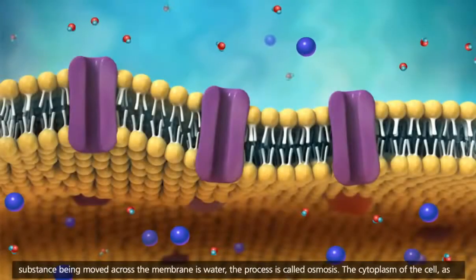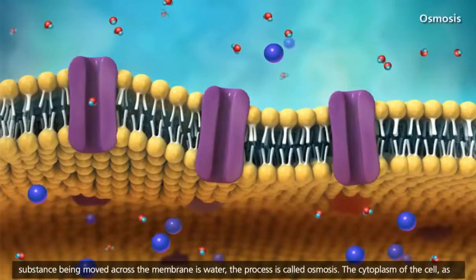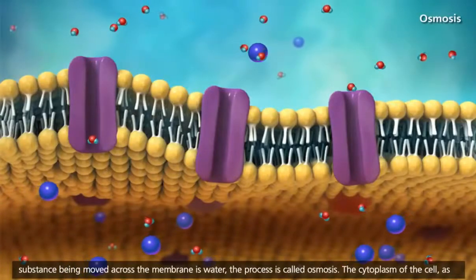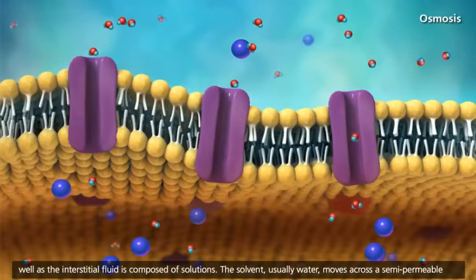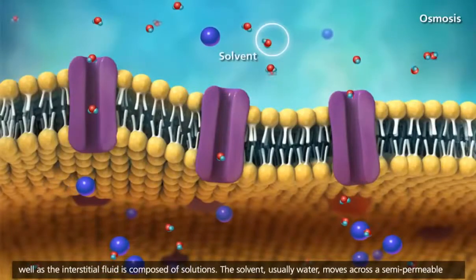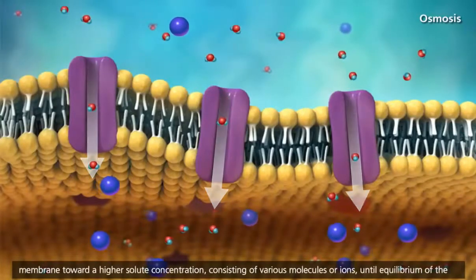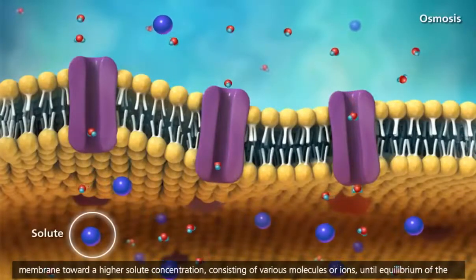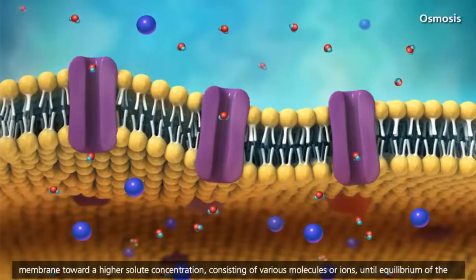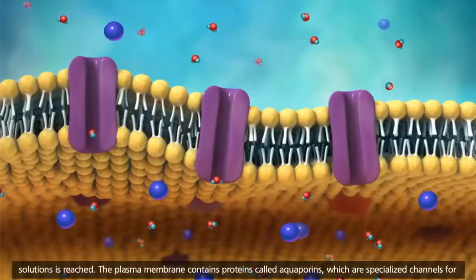When the substance being moved across the membrane is water, the process is called osmosis. The cytoplasm of the cell, as well as the interstitial fluid, is composed of solutions. The solvent, usually water, moves across a semi-permeable membrane toward a higher solute concentration, consisting of various molecules or ions, until equilibrium of the solutions is reached.